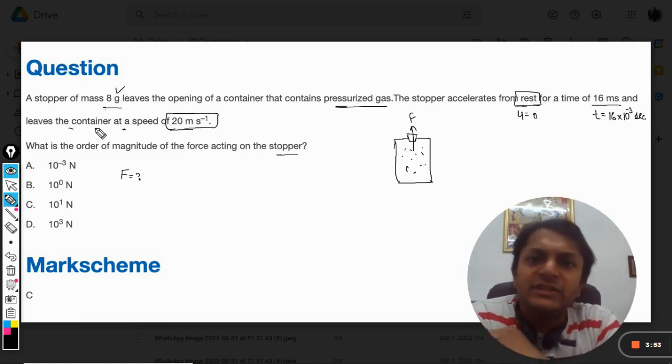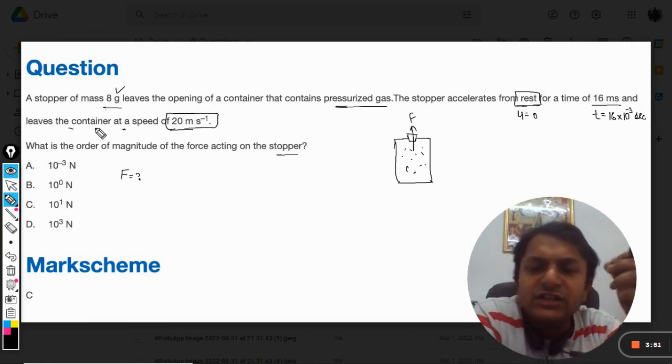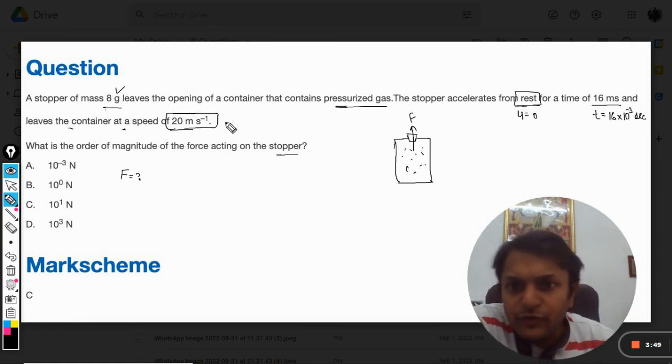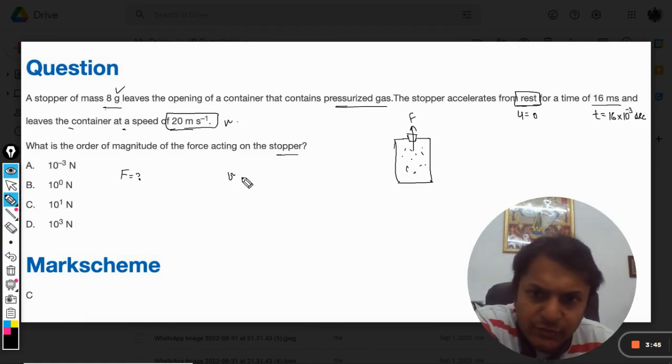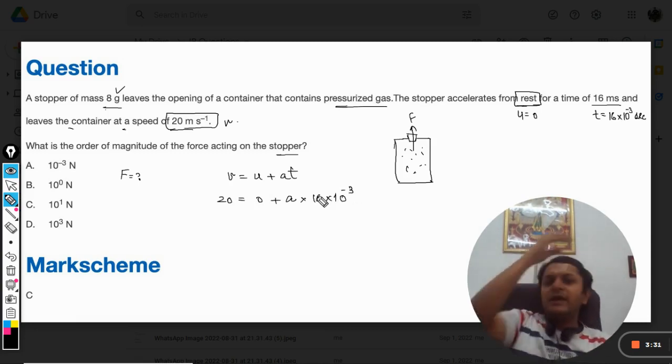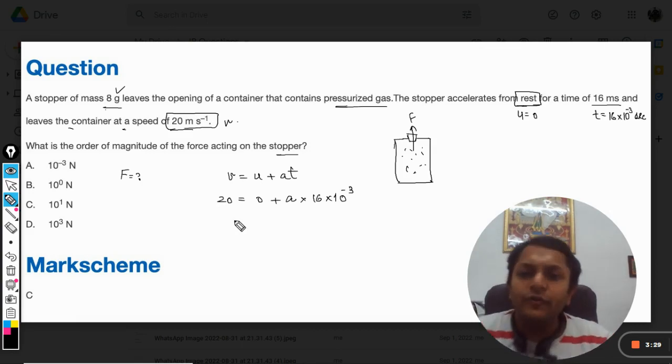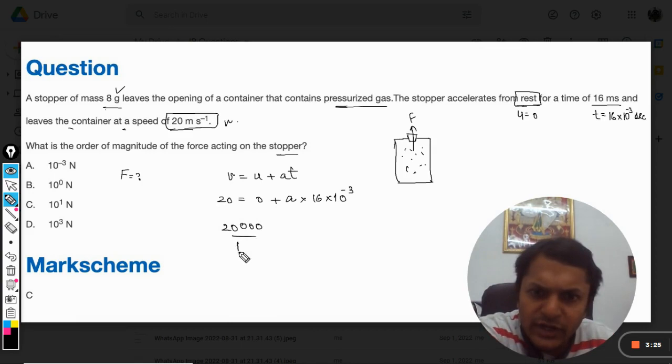Time is given, u is given, we can find acceleration. Using v = u + at, so 20 meters per second, u is 0, we need to find acceleration, and time is 16×10^-3. From here we get 20,000 divided by 16 as the acceleration.